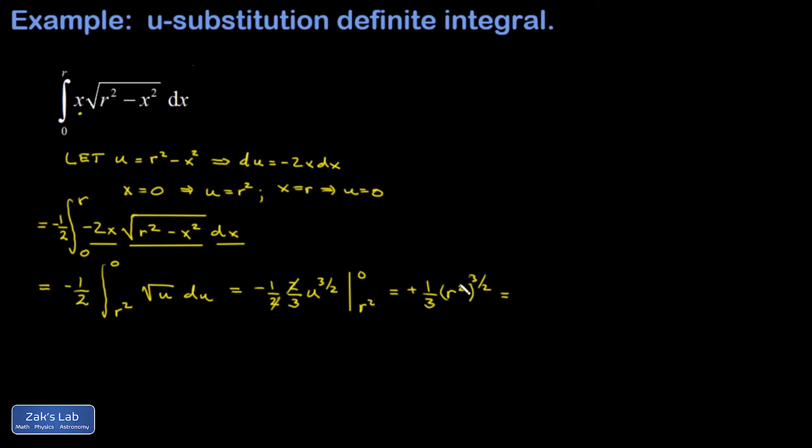The exponent of three halves means you square root what's in there and then you cube it, so I end up with one third r cubed and we're done.